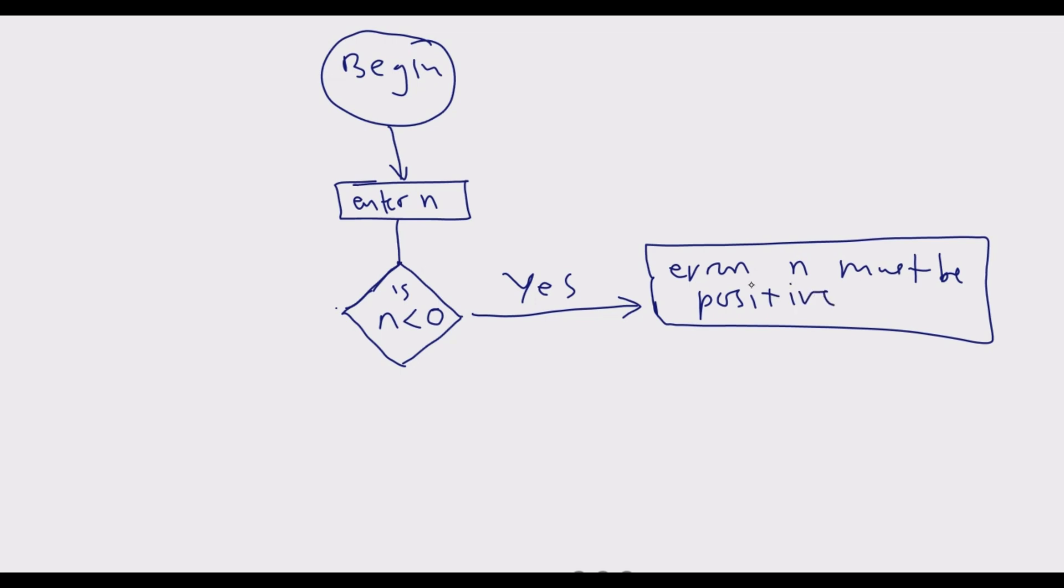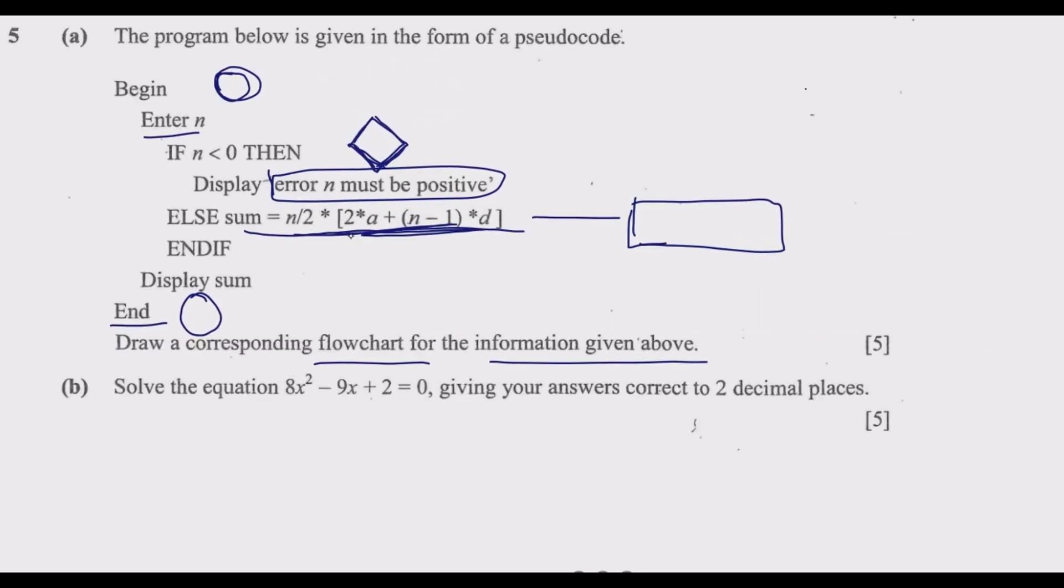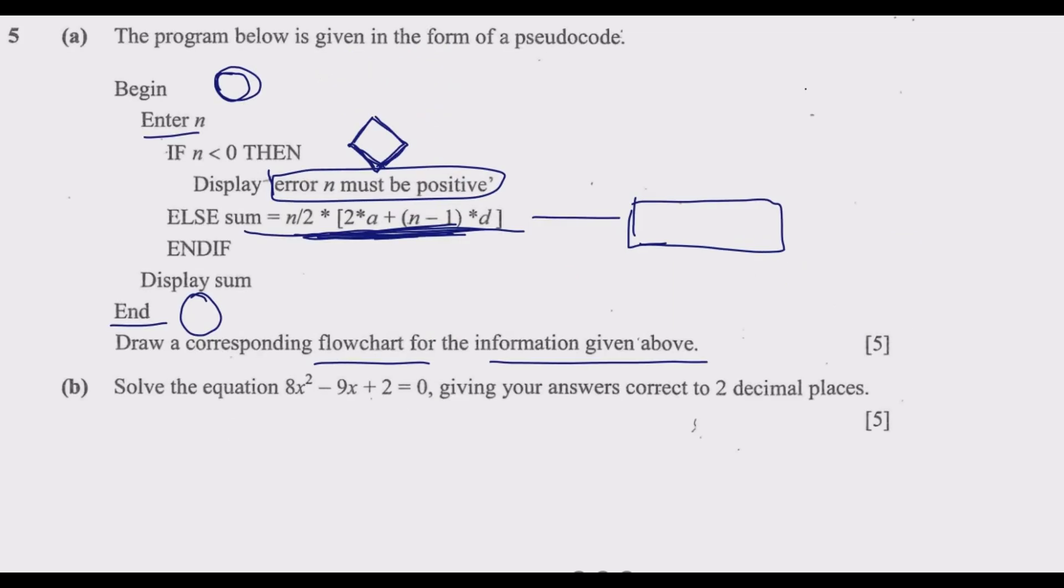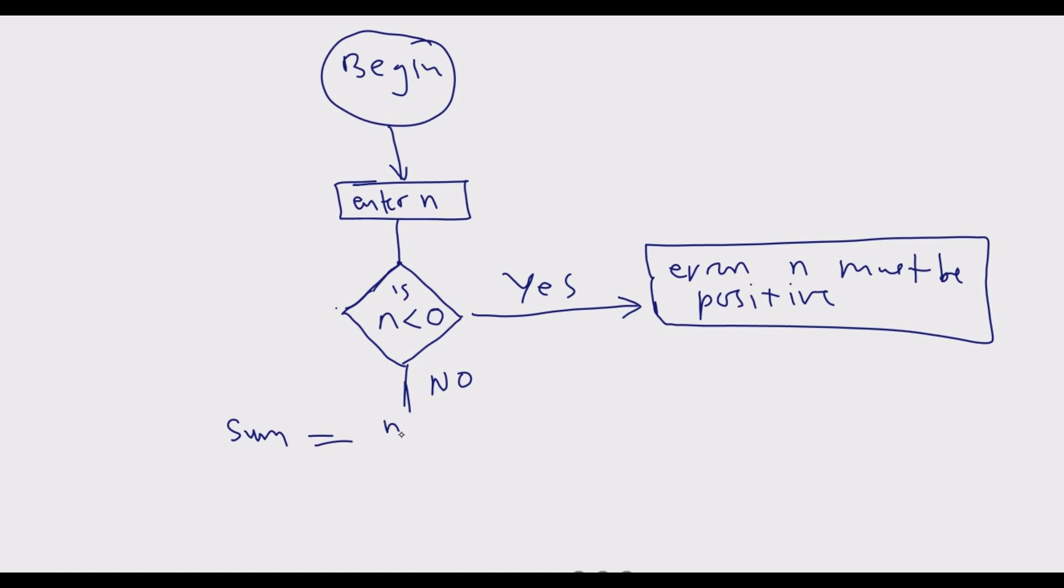If n is not less than zero (which is no), if it is greater, then we proceed with the calculation. The calculation is: sum = n/2 * (2*a + (n-1)*d). Notice this is the sum over a geometric progression.